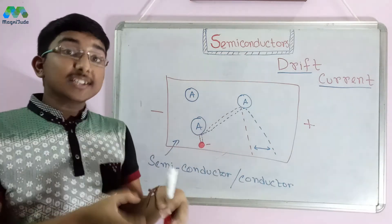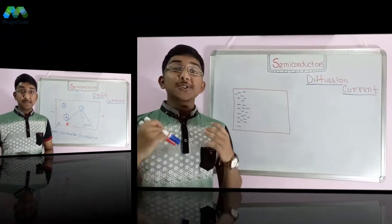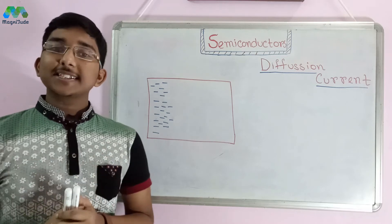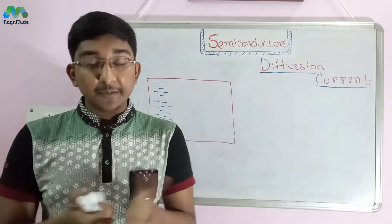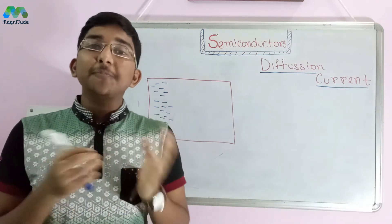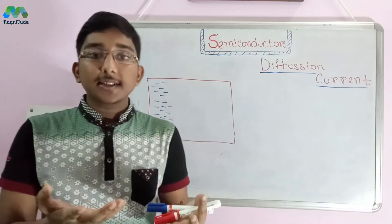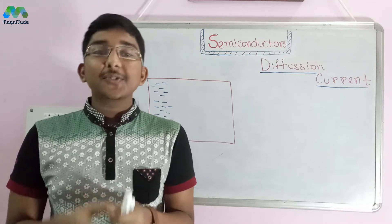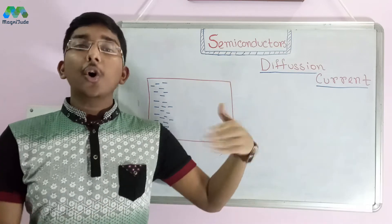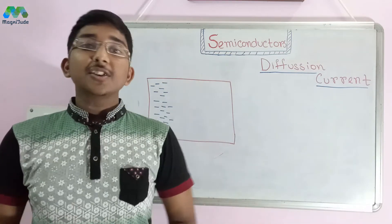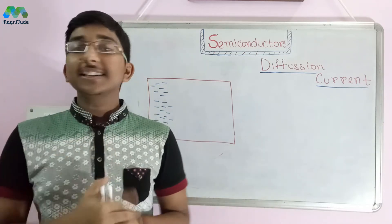The drift should always be toward the positive terminal, and the current due to this drifting of electrons is known as drift current. Before understanding diffusion current, we need to understand diffusion. Diffusion means the movement of particles from higher concentration to lower concentration. Higher concentration means where the accumulation of particles is very high, and lower concentration is where it is low or negligible.